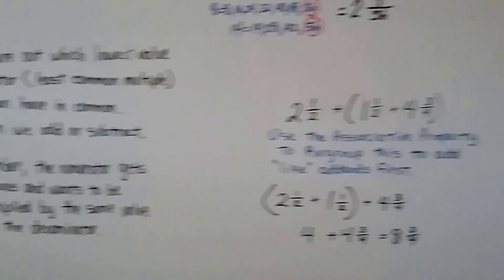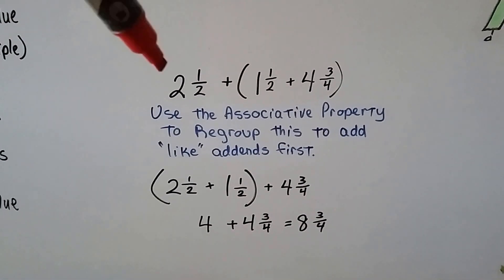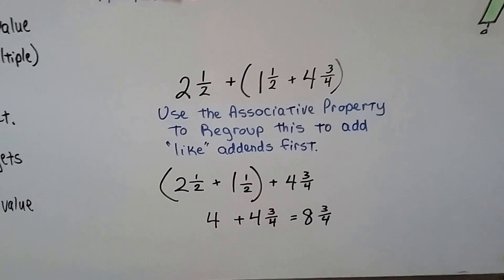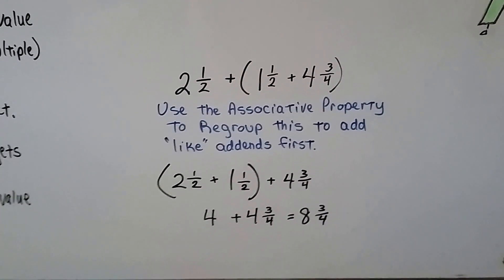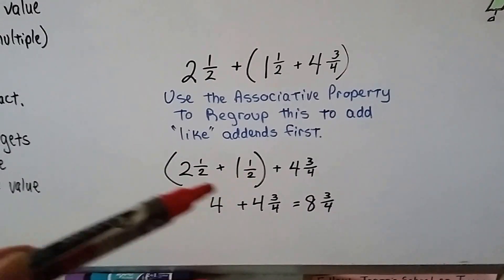I wanted to throw in something else. When you see something like this, and you see how they're grouped, notice that these are halves. And 2 halves make a whole, don't they? So when you see something like this, use the associative property to regroup this to add like addends first. If we add these two together, we're going to get a 4.